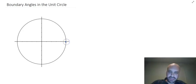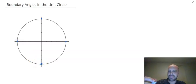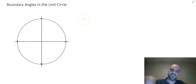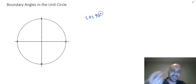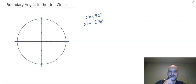I'm talking about this point, this point, this point, and this point. And I need you to be able to say what the value of, say, cosine 90 degrees is, or what the value of sine 270 degrees is, because these are boundary angles.